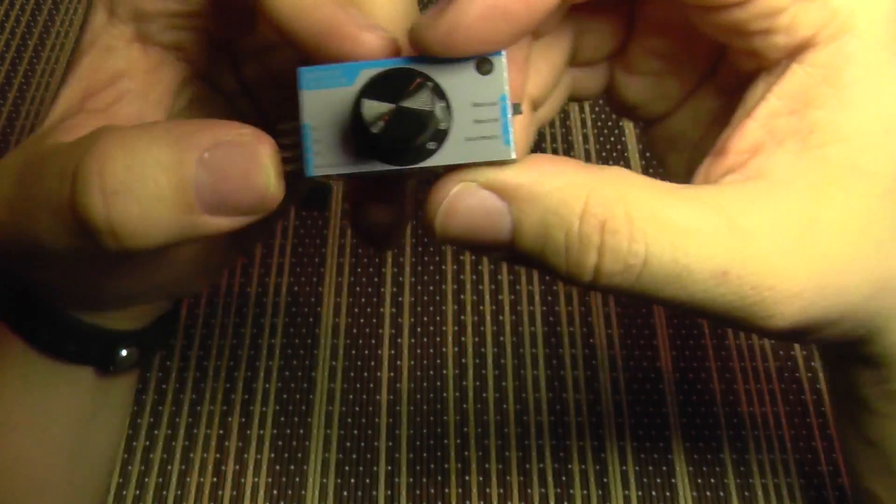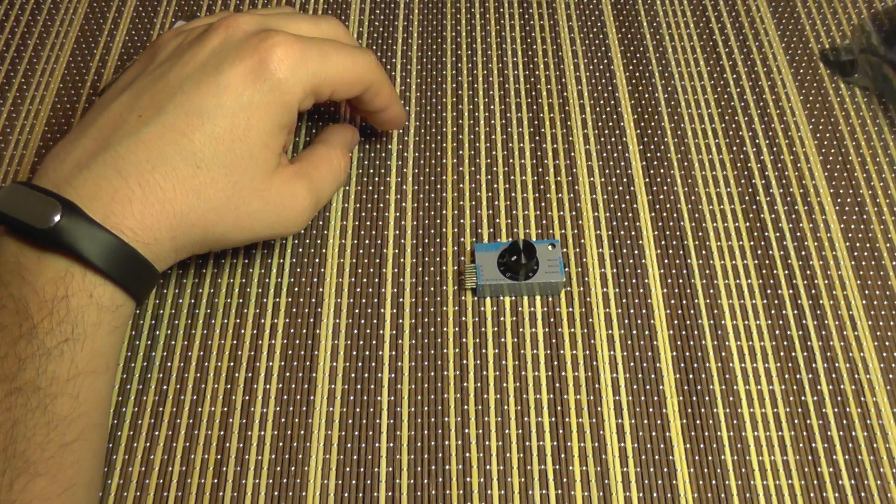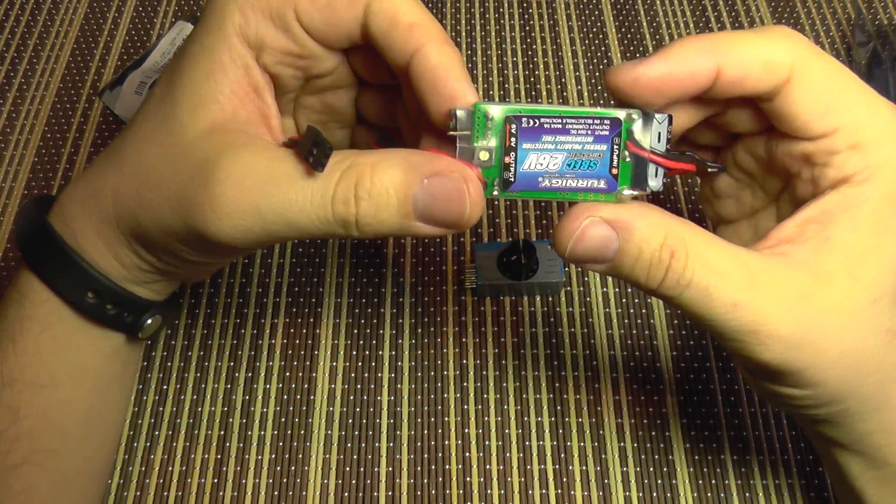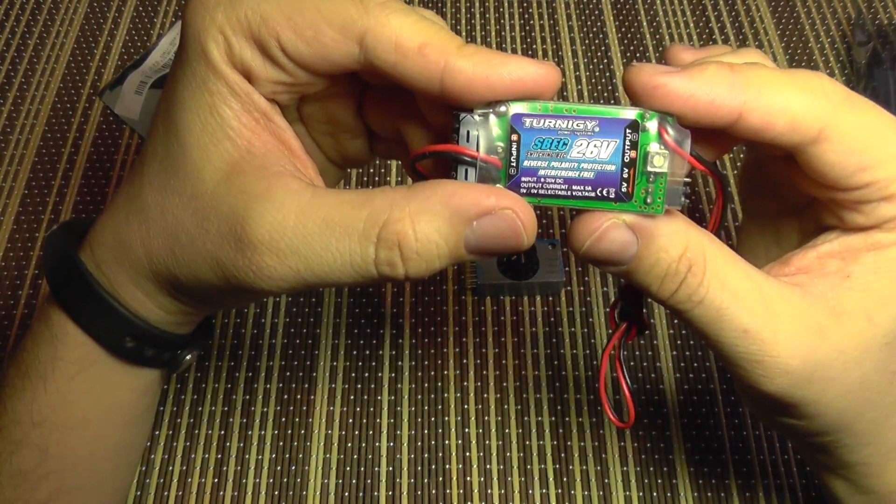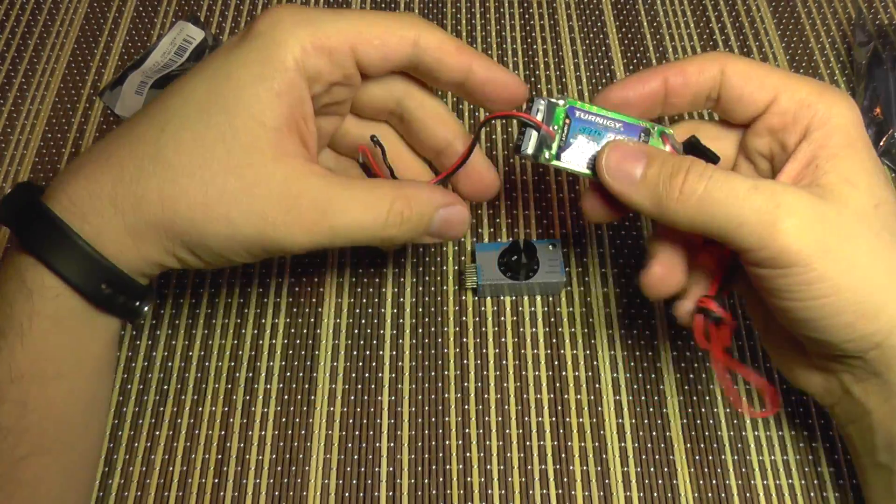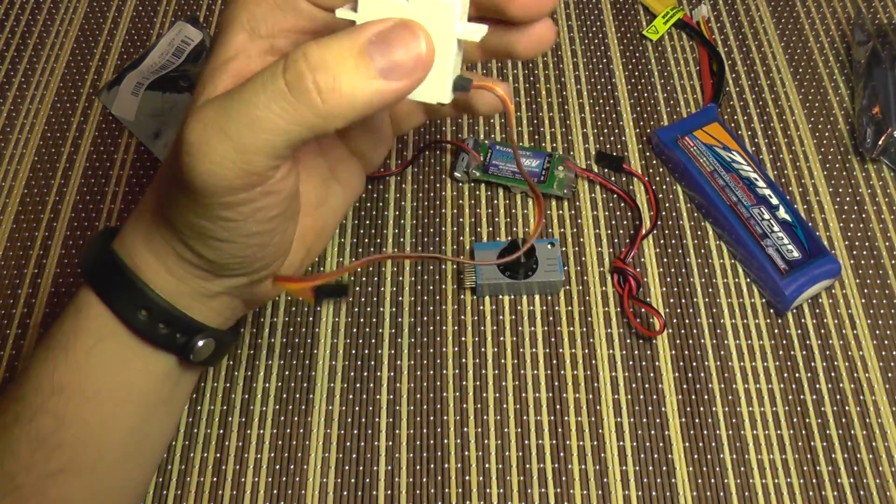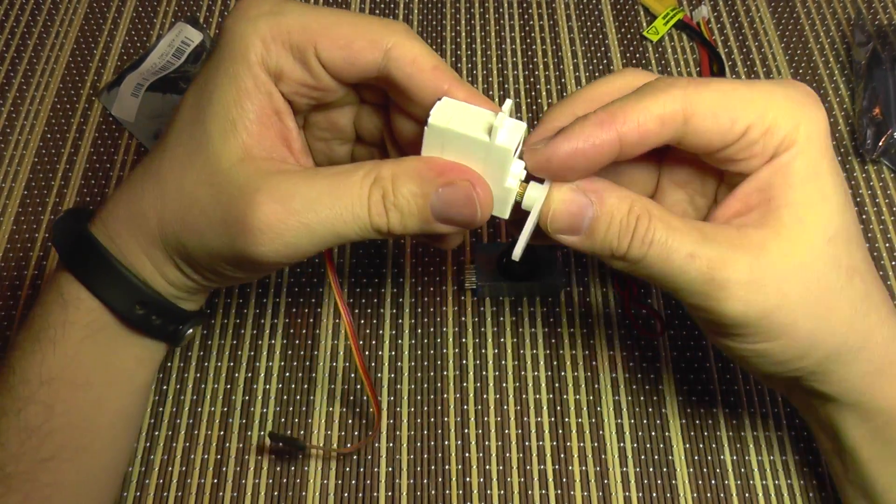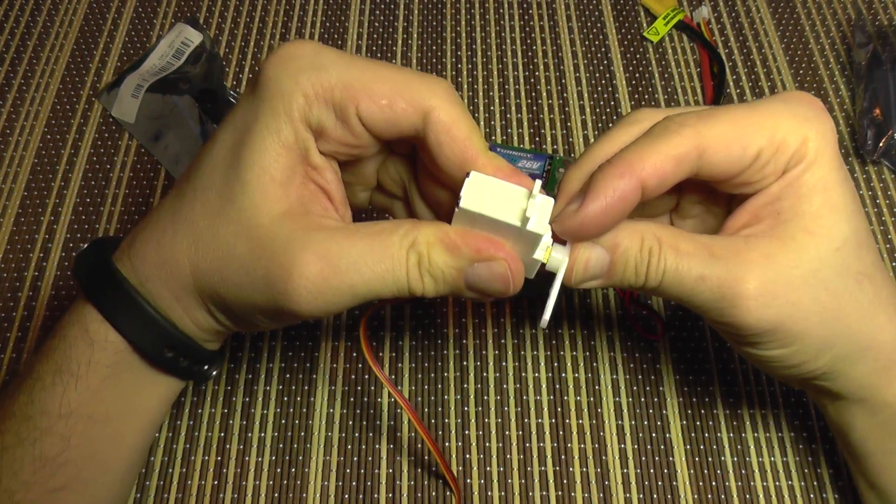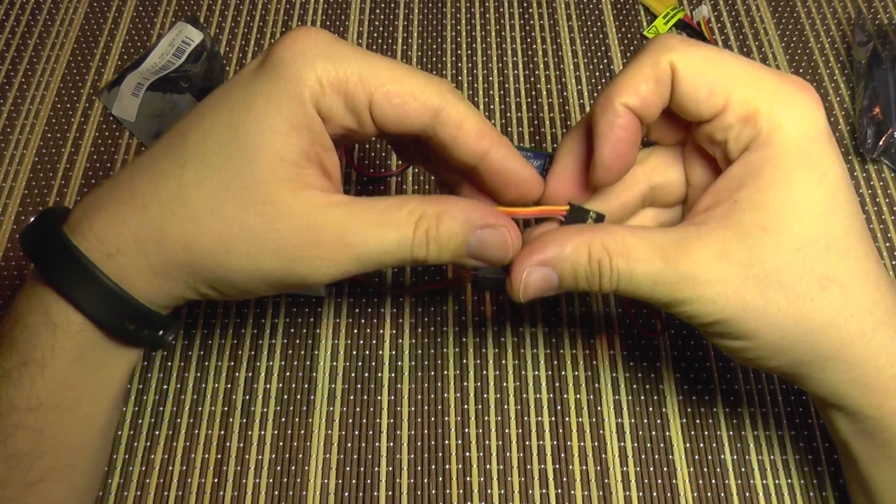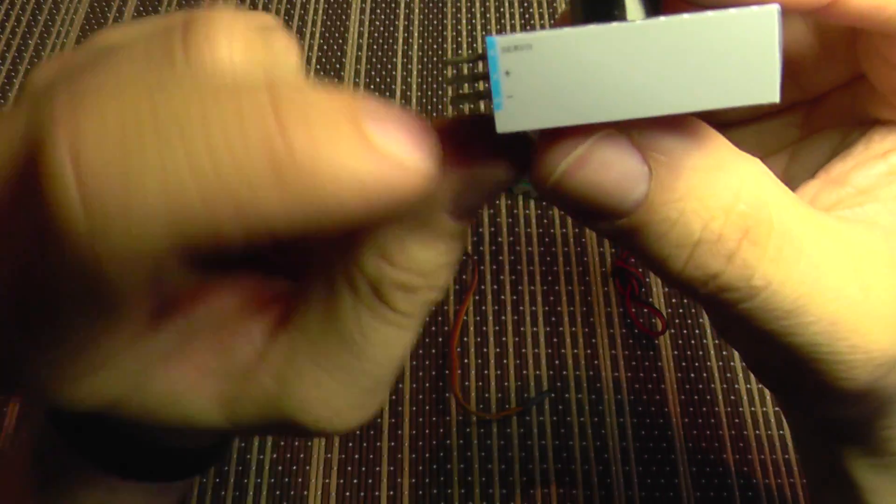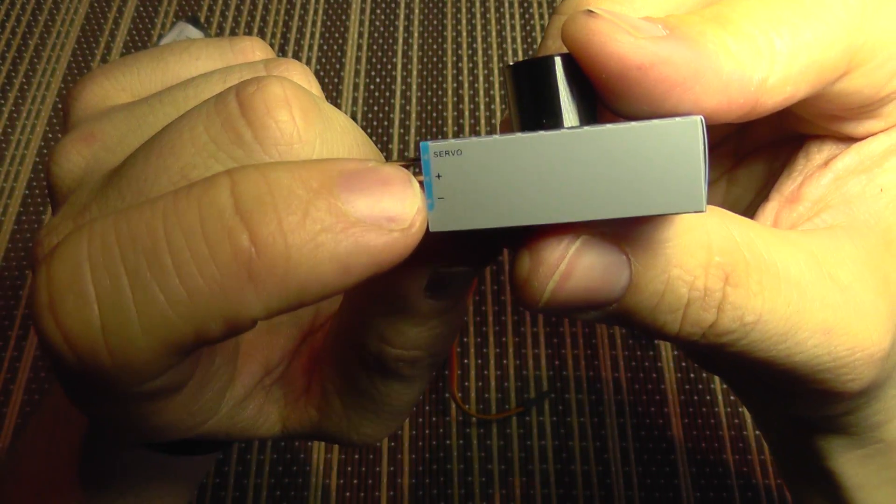Let's see how this goes. I'm going to use a battery eliminator circuit that provides constant 5 volts from a lipo battery to supply power, and of course a servo with an arm so you can see the movement. Now I'm going to connect the servo. You can see it has here a wiring guide.